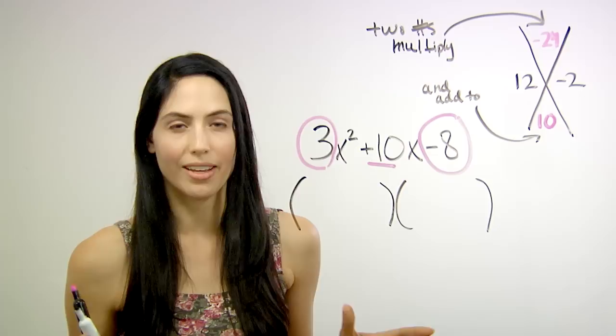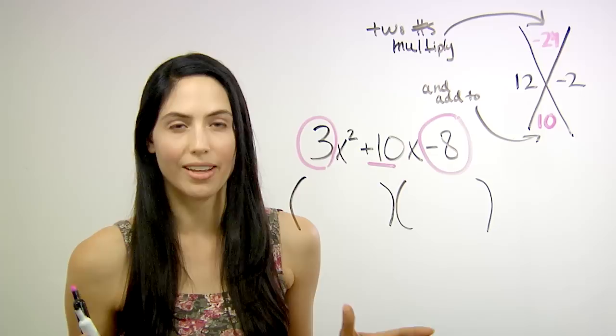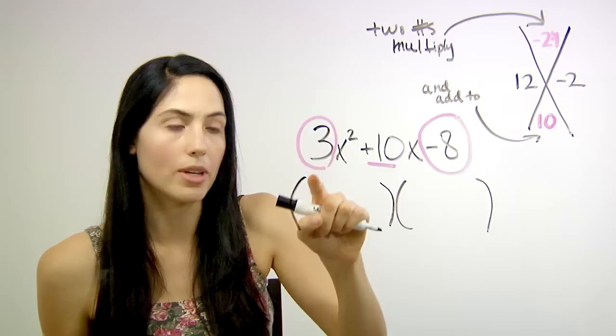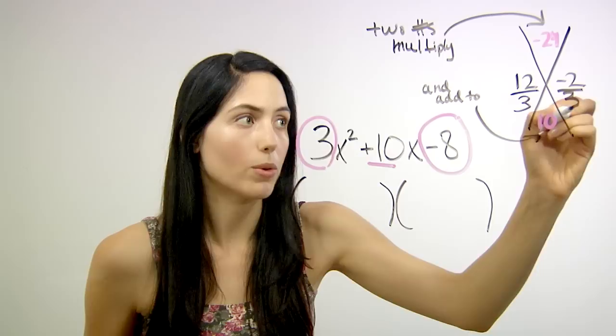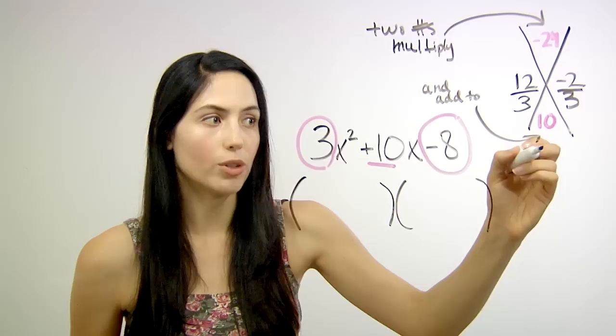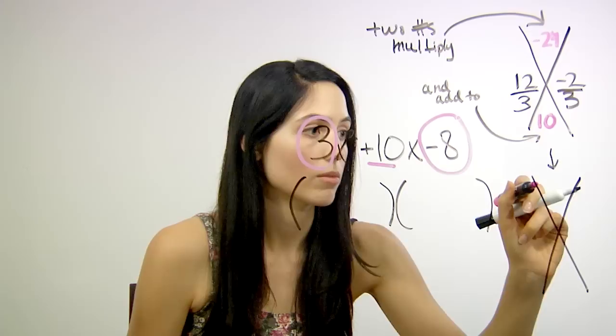Next step in the magic X method is, for each of these numbers, divide them by your leading coefficient. In this problem, it's 3. 3 is the first coefficient on your x squared. So you divide this number by 3, and you divide this number you found by 3. Those fractions simplify, so I'm going to write a simplified X down here.